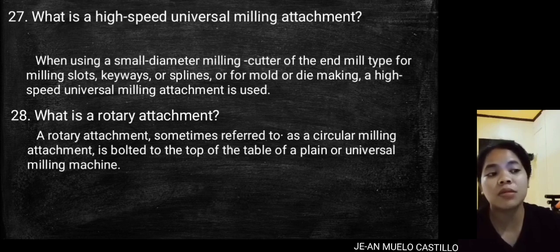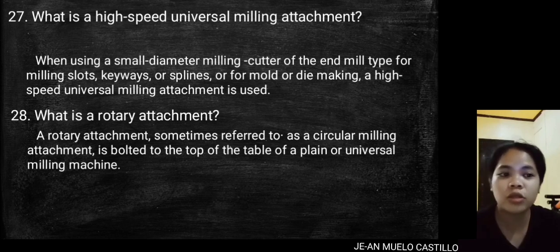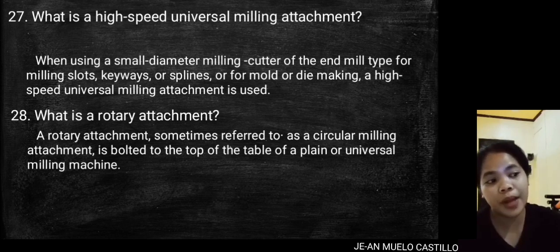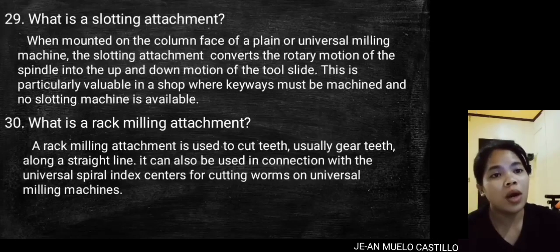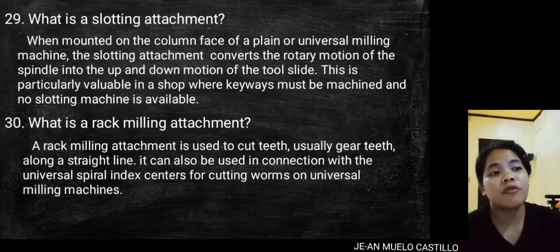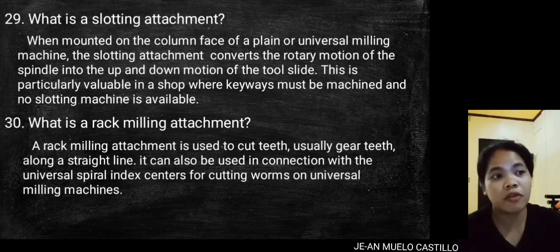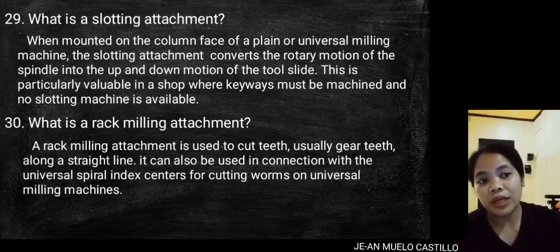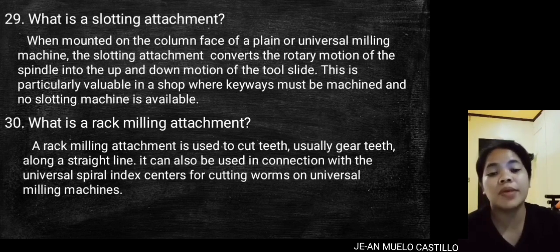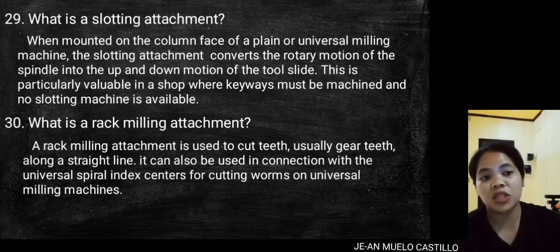What is a rotary attachment? A rotary attachment, sometimes referred to as a circular milling attachment, is bolted to the top of the table of a plain or universal milling machine. When mounted on the column face, the slotting attachment converts the rotary motion of the spindle into the up and down motion of the tool slide, which is particularly valuable for machining keyways when no slotting machine is available.